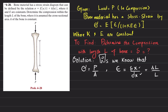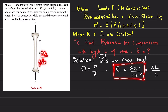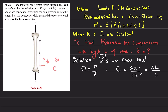Consider a small length dx along the bone. Due to this load, the change in this small element dx is represented as delta x. So strain epsilon equals delta x divided by dx, where delta x is the change in length and dx is the original small length.